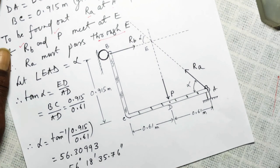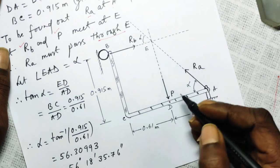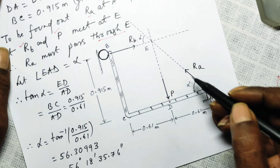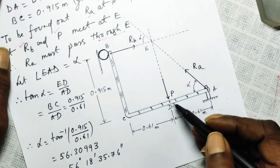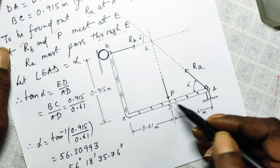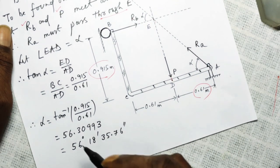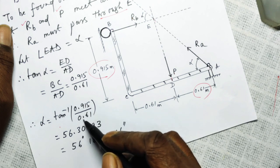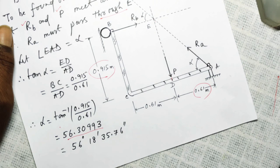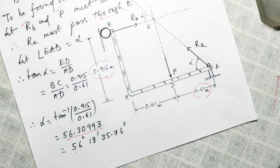Now apply tan(alpha). In triangle ADE, which is right-angled, tan(alpha) equals the perpendicular over the base, that is ED over AD. ED is the same as BC, and AD is given. So alpha equals tan⁻¹(0.915 / 0.61), which comes out to 56 degrees 18 minutes 35.76 seconds of arc.